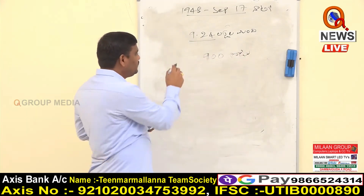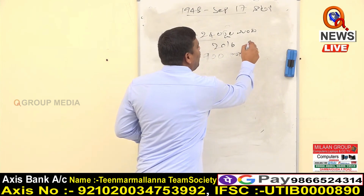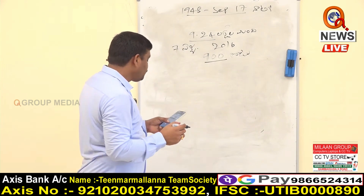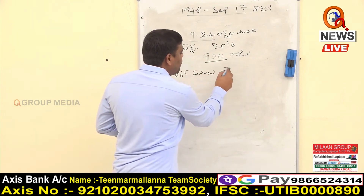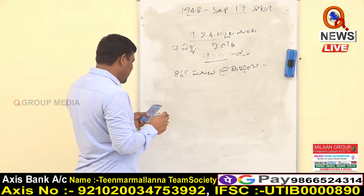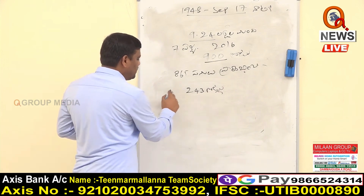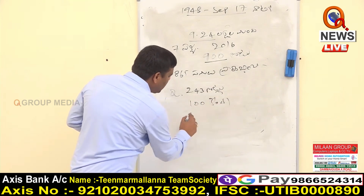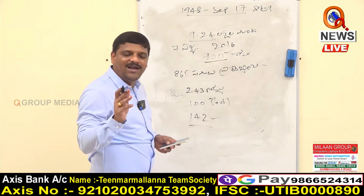That's the 7th level. That means, in the 2nd year, at the time of the municipal corporation, KCR has done a job. In the 7th year, KCR has done a job. In the 8th year, KCR has done a job.